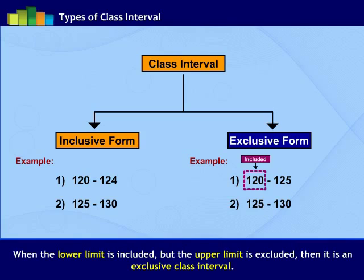while 125 is excluded while grouping. Then in 125 to 130, 125 is included and 130 is excluded. This type of interval are exclusive type of class intervals.